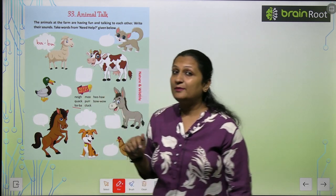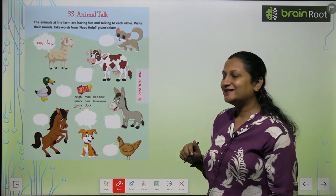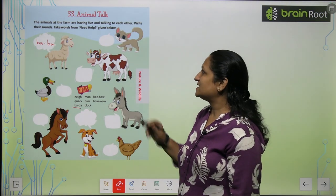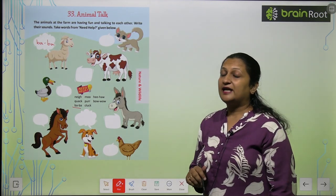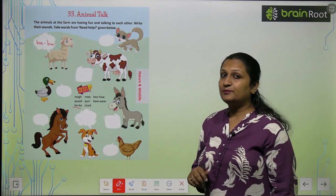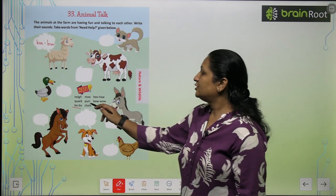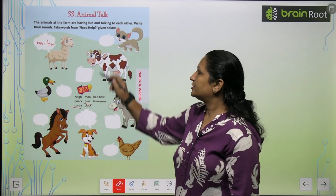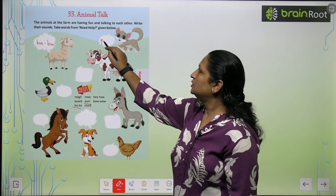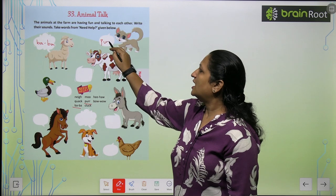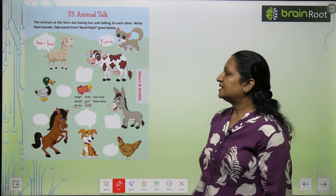We have read this before — Baa Baa Black Sheep, remember? Now, this is a cat. A cat कैसी sound produce करती है? Cat produces a purr sound — P-U-R-R.